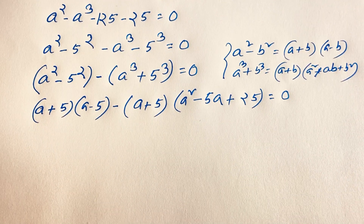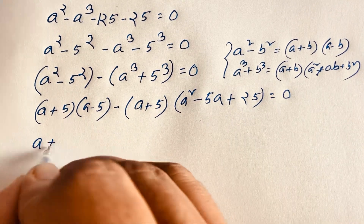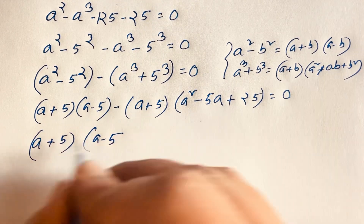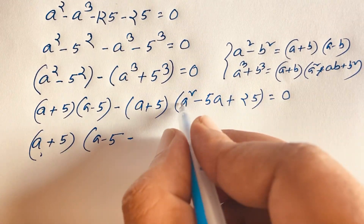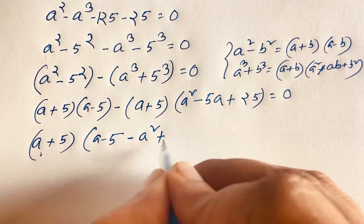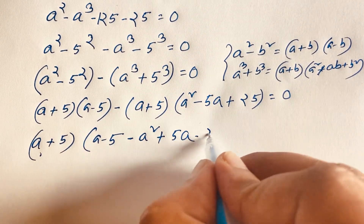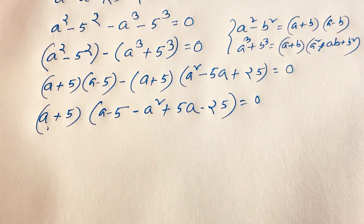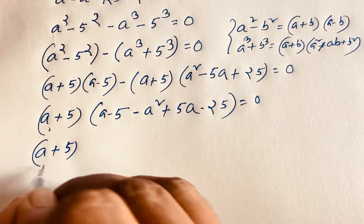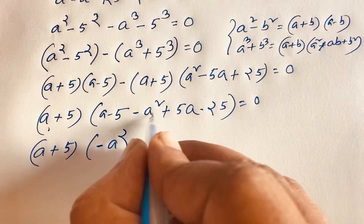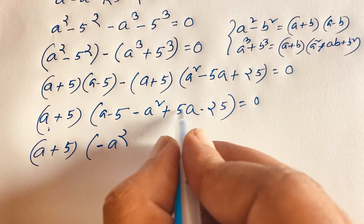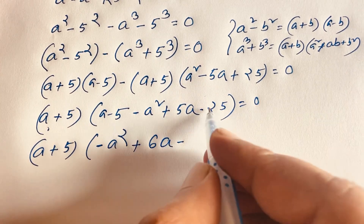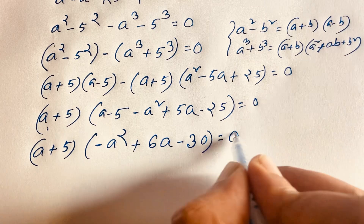Now you can see easily here is (a plus 5) is common. So, factoring (a plus 5): this divided gives (a minus 5), and the other part divided gives negative (a squared minus 5a plus 25). Combining: it will be (a plus 5) times negative a squared, and 5a plus a gives plus 6a, and minus 25, minus minus gives minus 30, is equal to 0.